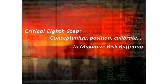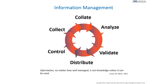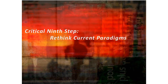The eighth step is to conceptualize, position, and calibrate — what I call maximizing risk buffering — which looks at how we manage information and get it into a cycle where we collect it, collate it, analyze it, validate it, distribute it, and control it, so it can be utilized throughout the organization. People within and external to the organization need to understand what we're presenting to them. The challenge is making this a way of doing business rather than just an adjunct to the business.